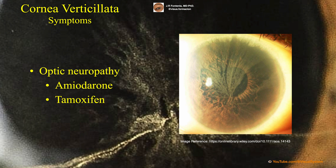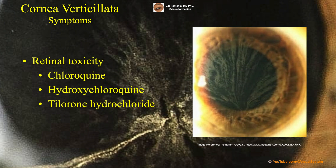In patients with cornea verticillata and decreased visual acuity, concomitant with the use of amiodarone or tamoxifen, we must rule out optic neuropathy as the main cause of visual impairment. And if visual acuity is affected by the use of chloroquine, hydroxychloroquine, or tilurone hydrochloride, we must rule out retinal toxicity.